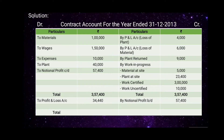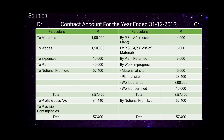The total of both the debit and credit sides is rupees 57,400. The balancing amount on the debit side is termed Provision for Contingency, which is rupees 22,960.